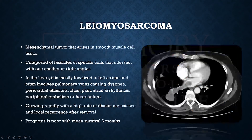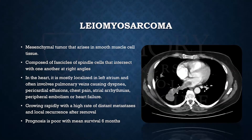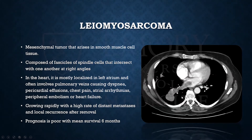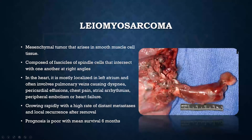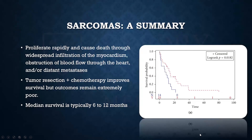The leiomyosarcoma is composed of smooth muscle tissue that most commonly invades the left atrium and originates from the pulmonary veins. A patient presented with chest pain, shortness of breath, and dyspnea on exertion and was found to have a leiomyosarcoma originating from the pulmonary veins extending directly into the left atrium. These carry a very, very poor prognosis with a mean survival of six months and grow extremely rapidly.